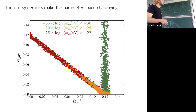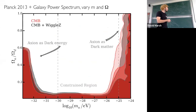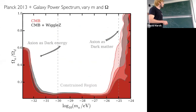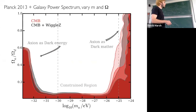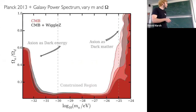These degeneracies make this parameter space challenging. Back in 2013–2014 we devised a way to do a global scan over axion mass and axion fraction relative to total dark matter. The contours are two and three sigma from a nested sampling algorithm. You see this U-shaped structure: 10^{-25} eV cannot be all the dark matter, but once you get to 10^{-24} eV, as far as the CMB is concerned, anything heavier than that is allowed to be all the dark matter, and anything lighter than 10^{-33} eV is allowed to be all of the dark energy. This was with Planck 2013 and a galaxy power spectrum.